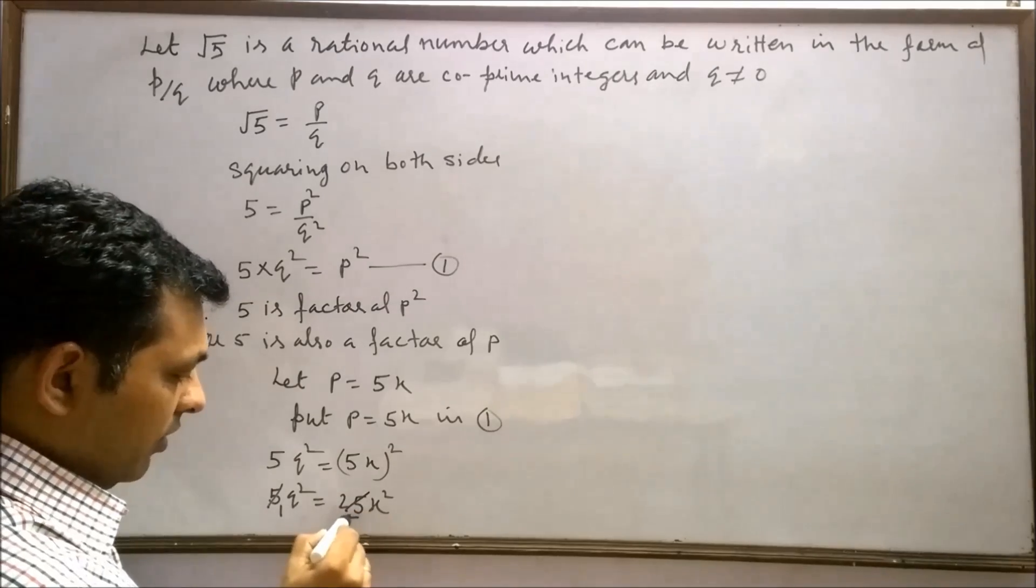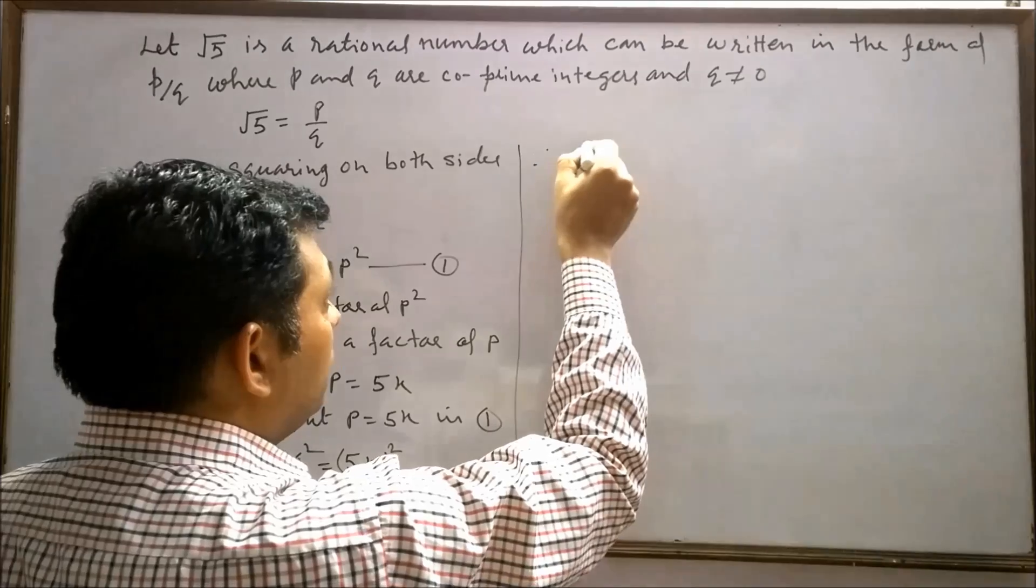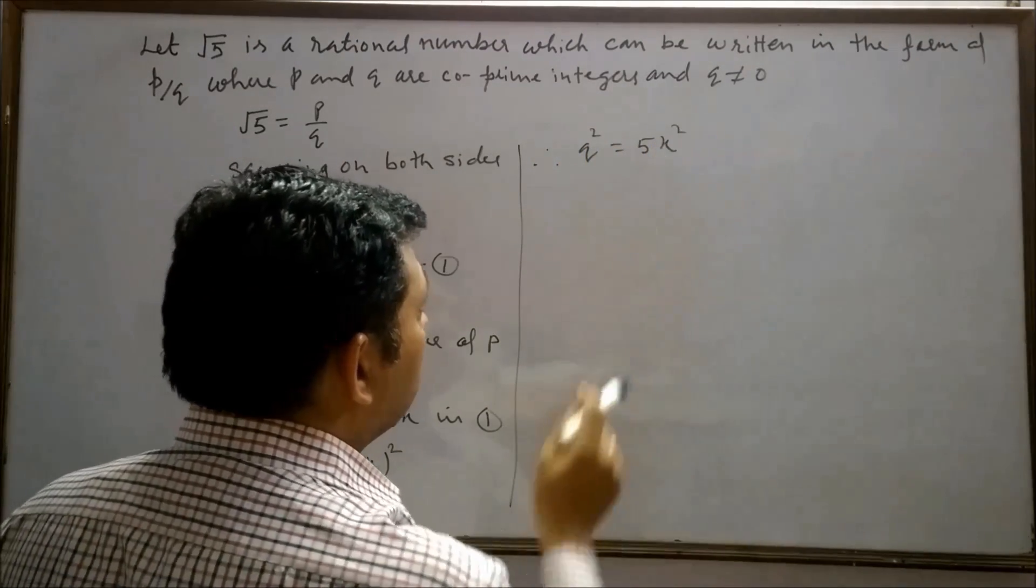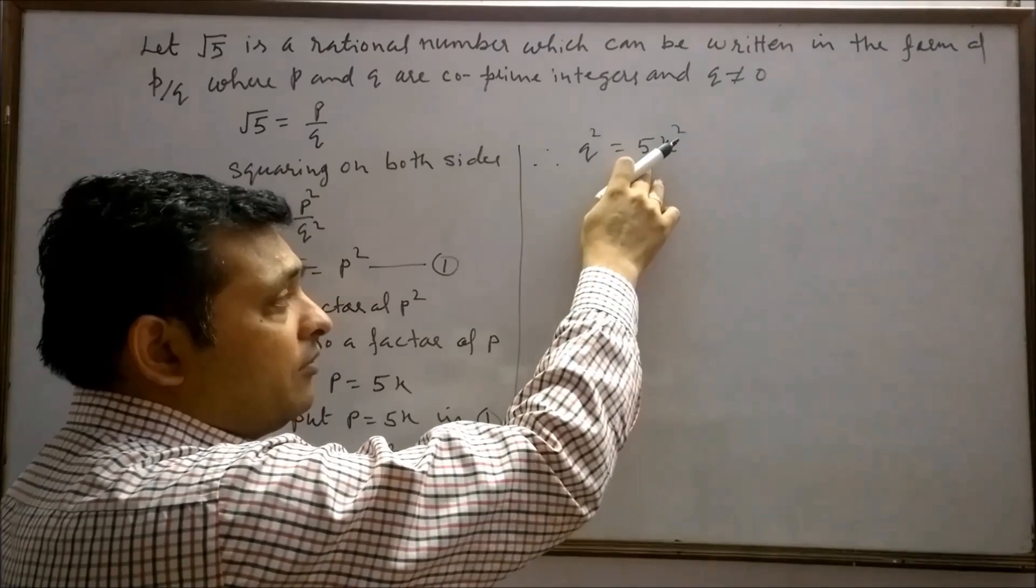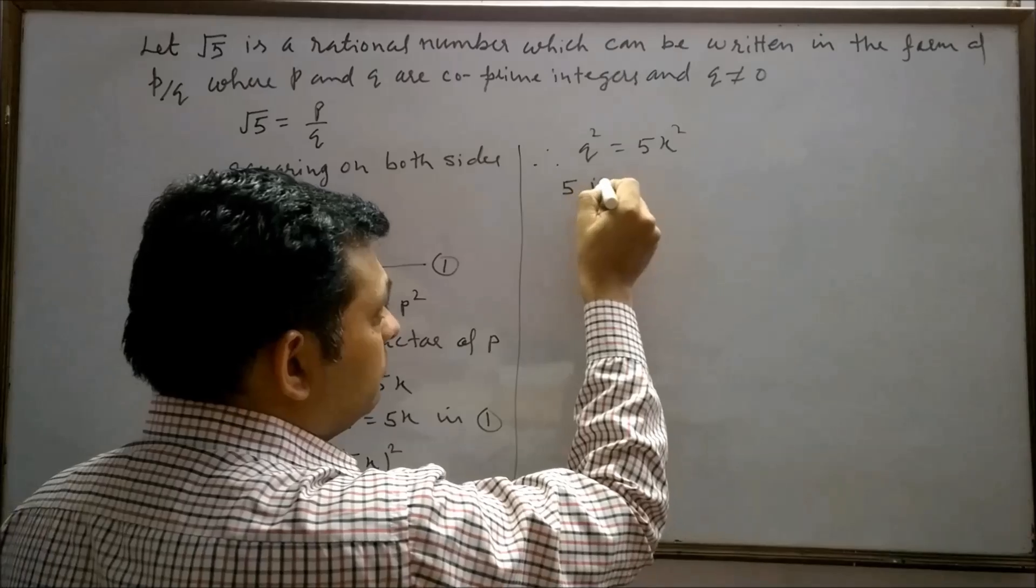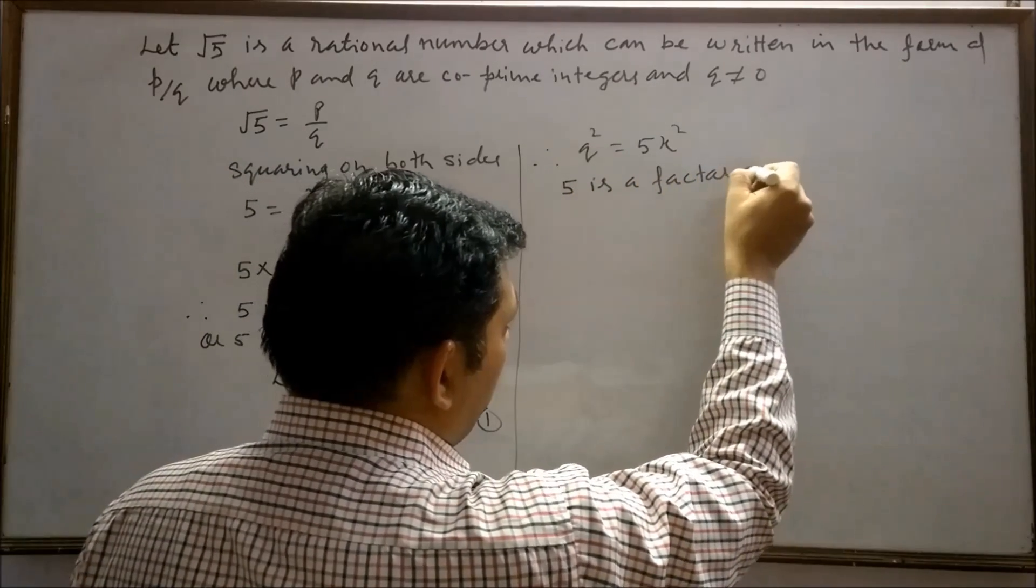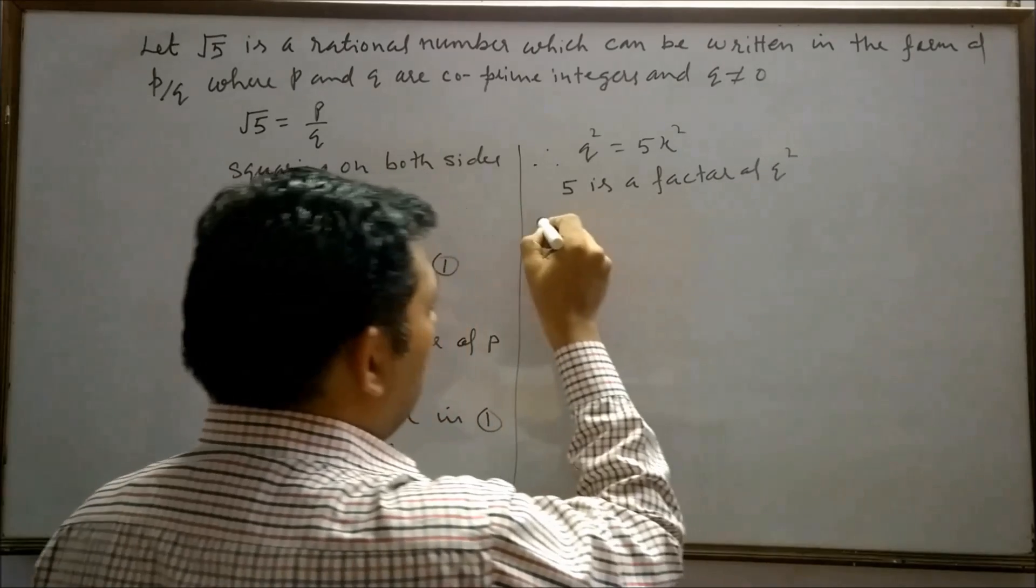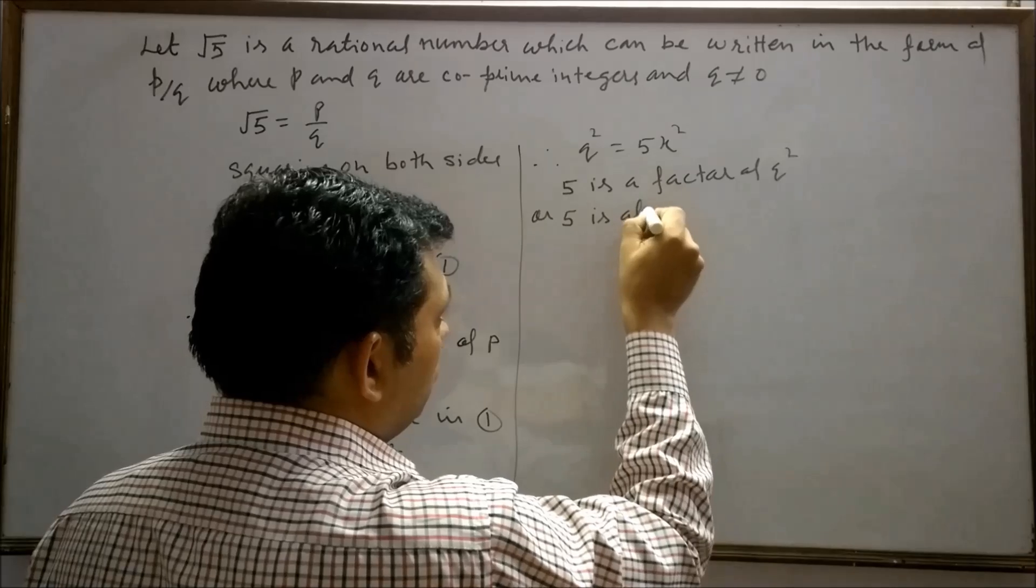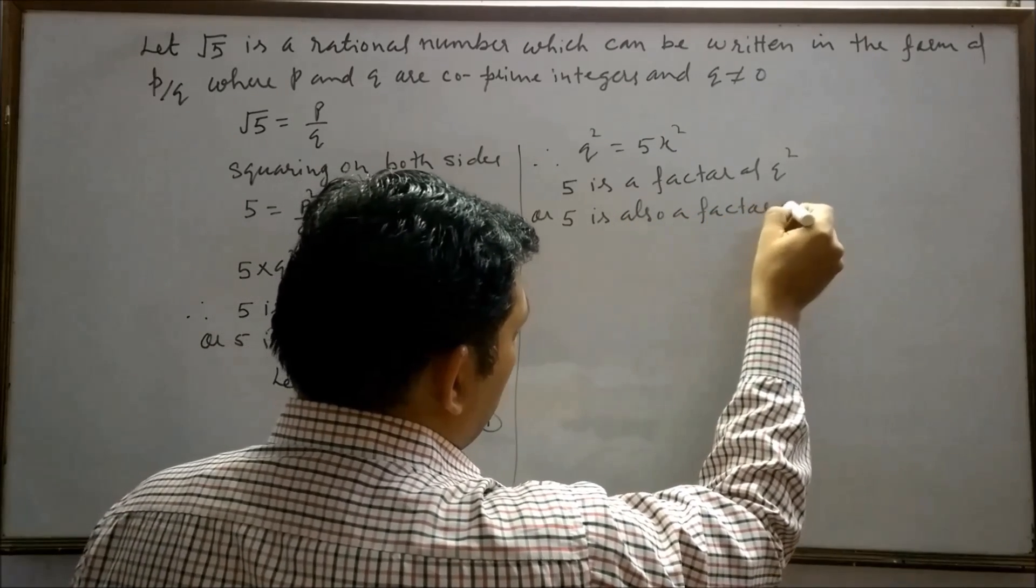Now reduce both sides by 5. Therefore q square is equal to 5x square. Now we can say 5 is a factor of q square, and 5 is also a factor of q.